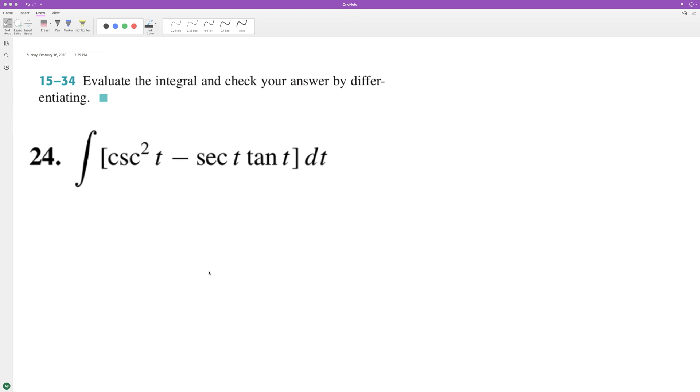So what's going to happen here is when we integrate cosecant squared t, or when we integrate each component, we'll do it separately. So like cosecant squared t minus the integral of secant t tangent t dt.